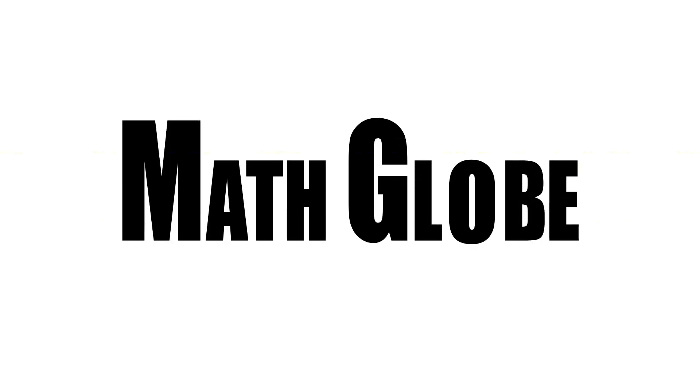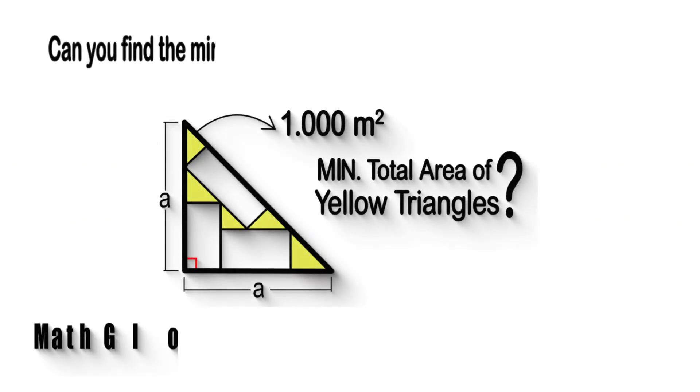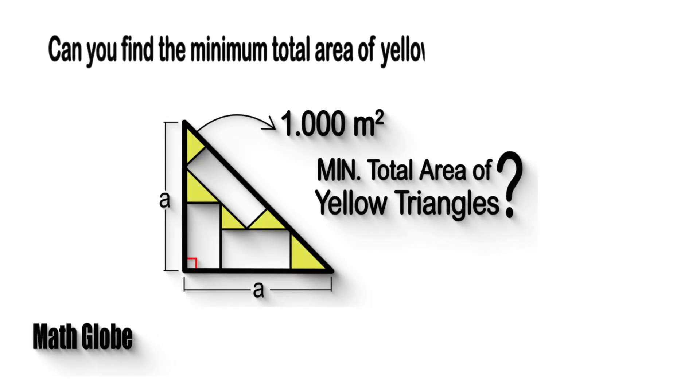Hi, this is mathglobe. Can you find the minimum total area of yellow right triangles?